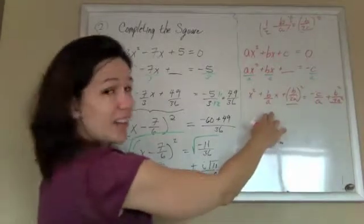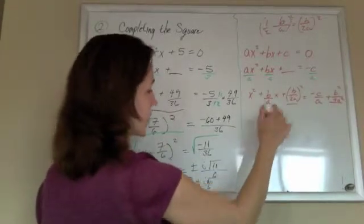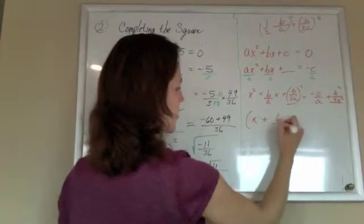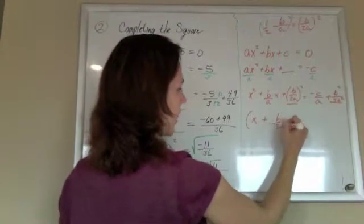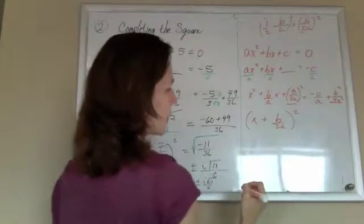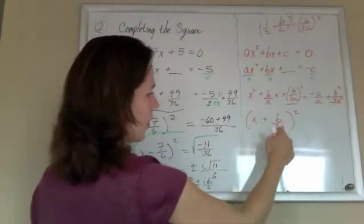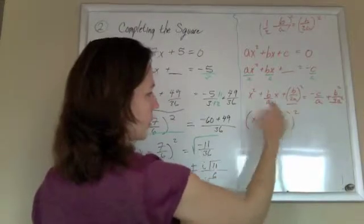And what this does is it creates a perfect square. This is x plus b over 2a squared. You can think of that as either half of that middle number, or square root of that number with that same sign.